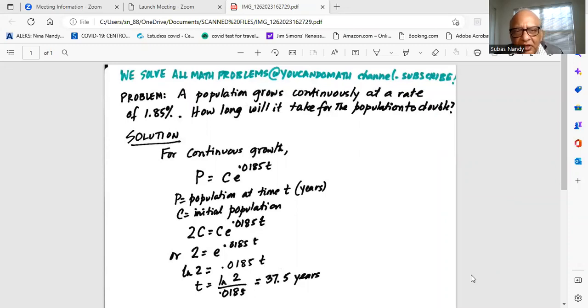The problem statement states that the population grows continuously at a rate of 1.85%. How long will it take for the population to double?